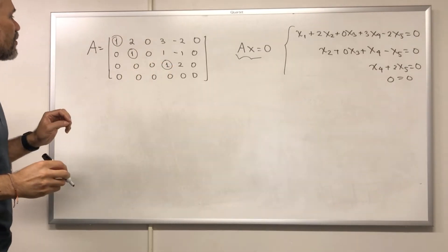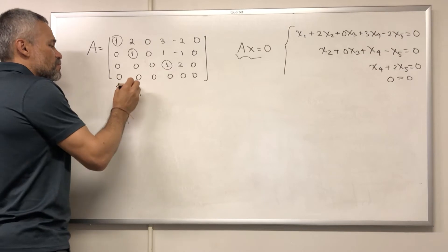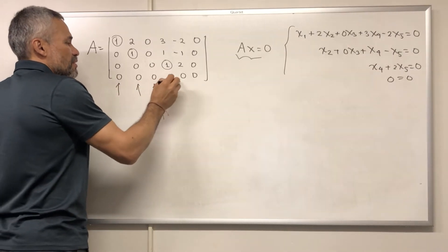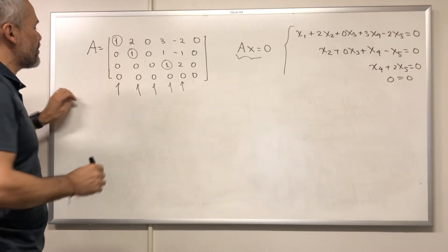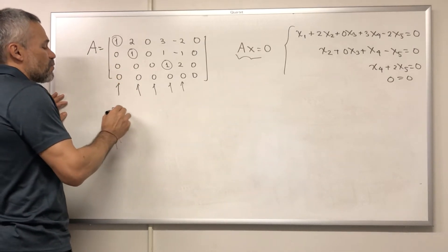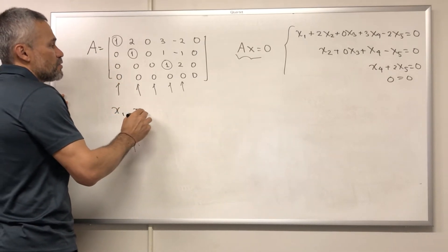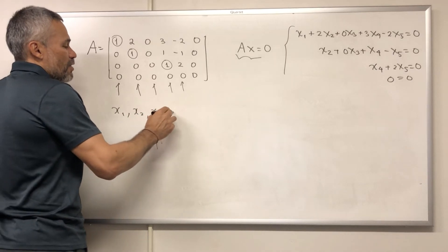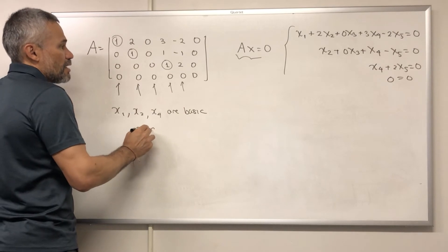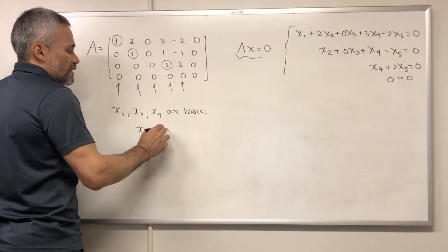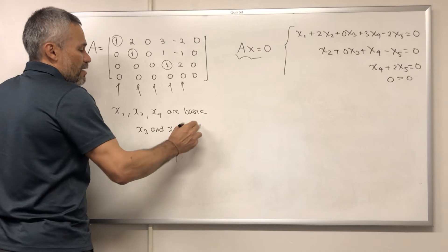And we have that these columns correspond with variables and the basic variables which are those that have a pivot are X1, X2 and X4 are basic and X3 and X5 are free.